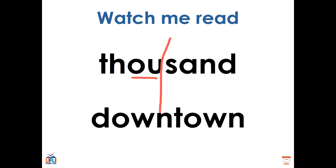Here's the word DOWNTOWN. If I split it into its syllables — DOWNTOWN — I would split it here in the middle. Each syllable has the diphthong OW in the middle. DOWNTOWN, DOWNTOWN.